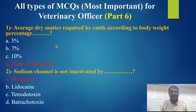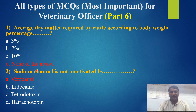These are the most important MCQs. The average dry matter required by cattle according to body weight percentage — 3%, 7%, 10%, or none of the above? The best answer is none of the above. The sodium channel is not inactivated by: verapamil, lidocaine, tetrodotoxins, or batrachotoxins? The best answer is verapamil.